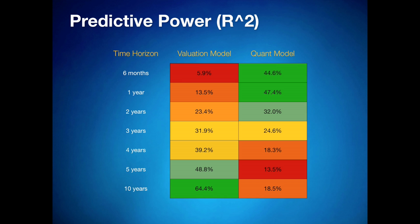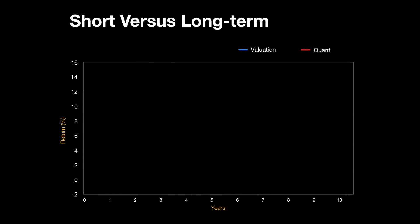Looking at the valuation model first, the R-squared over a six-month time frame is only 5.9%, which is pretty low. However, R-squared goes up as the time frame gets longer, reaching as high as 64.4% over a ten-year time frame — a pretty significant result. The opposite is true for the quant model, where R-squared is highest over the short time frames of six months and a year, then decreases as the time frame becomes longer. This tells us clearly: for the long term, rely on the valuation model; for the short term, rely on the quant model.